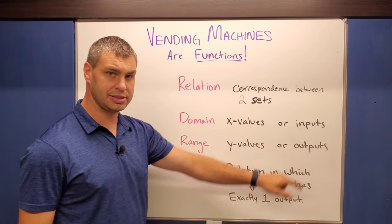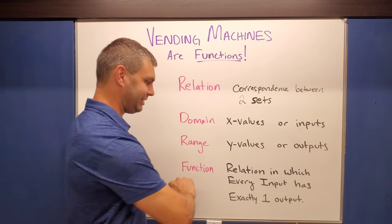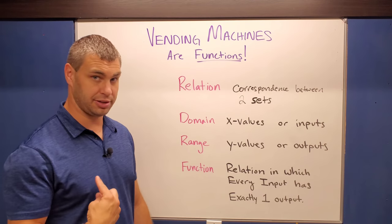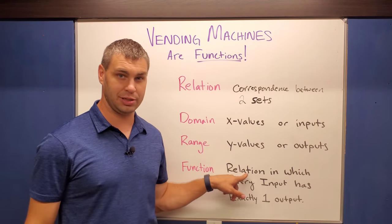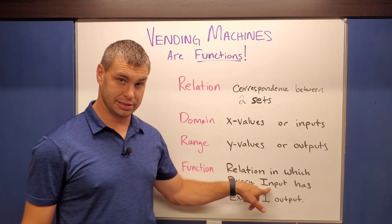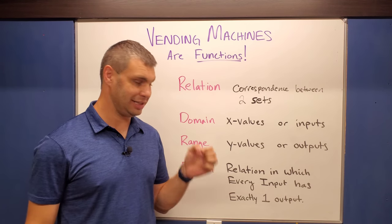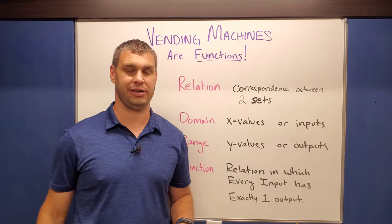Sometimes they're called inputs and outputs, and then the most important thing, write this down exactly like I have it here, especially if you're in my college algebra class, write down that our function is a relation in which every input has exactly one output, every single word in that is very important.